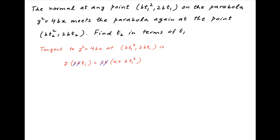2b cancels, and dividing by t₁ we get y = (1/t₁)x + bt₁. The coefficient of x is 1/t₁, therefore the gradient of the tangent is equal to 1/t₁.